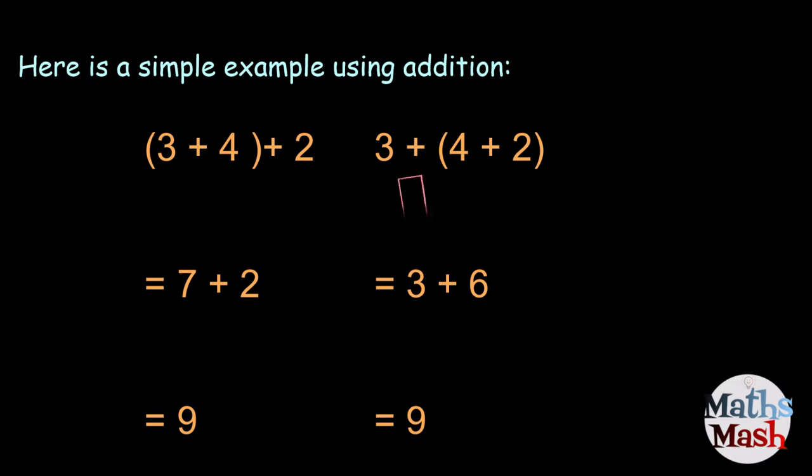Next one. We copy over the 3 plus. So, we have 3 plus on the second line. And 4 plus 2 gives us 6. So, now we have 3 plus 6 gives us 9.